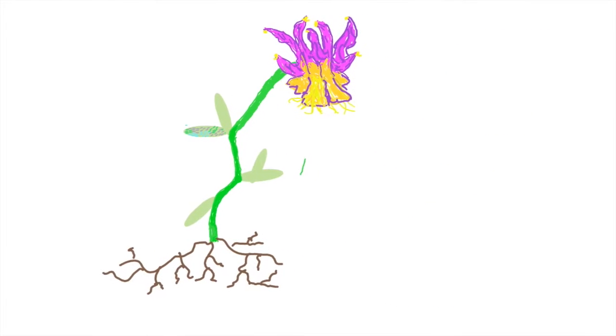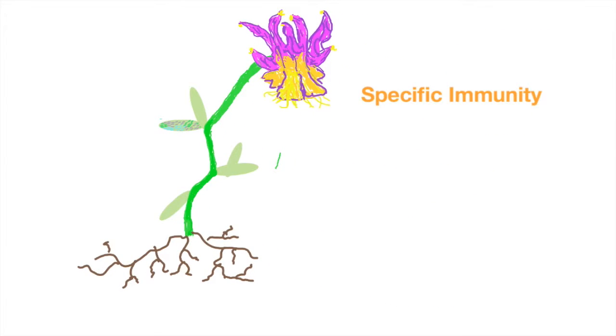Conceptually, plant immunity will fall into two different categories. The first of which is specific immunity. And the next is, I'm sure you could guess, non-specific immunity.